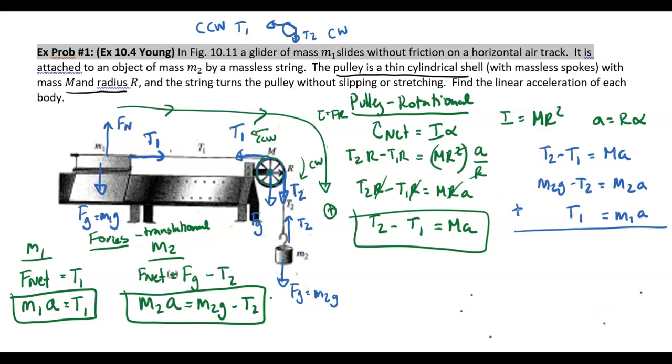I'm going to go ahead and add those all together. So T1 cancels out. T2 cancels out. And we're left with M2G equals big MA plus M2A plus M1A.